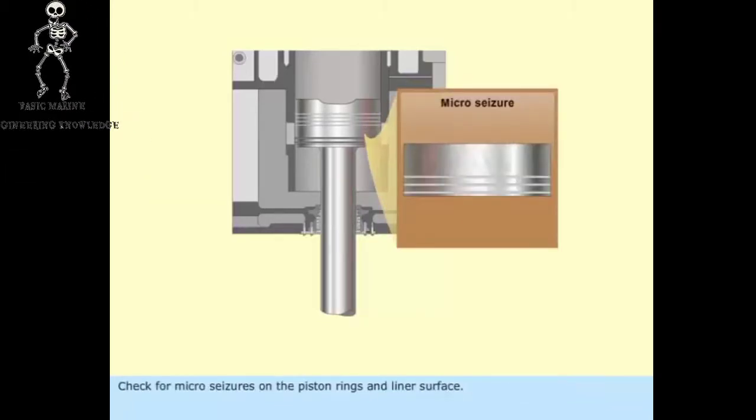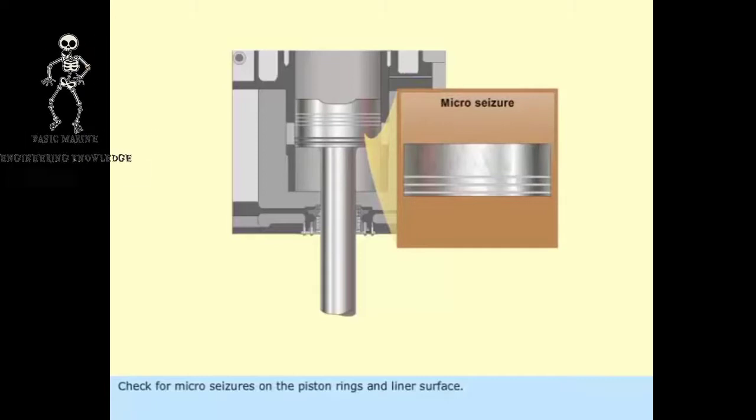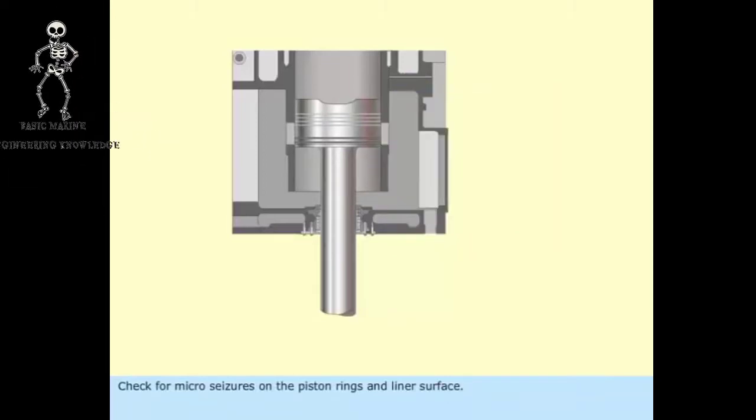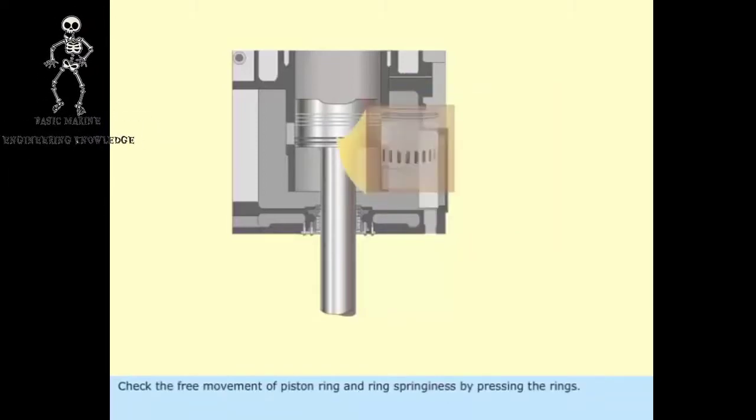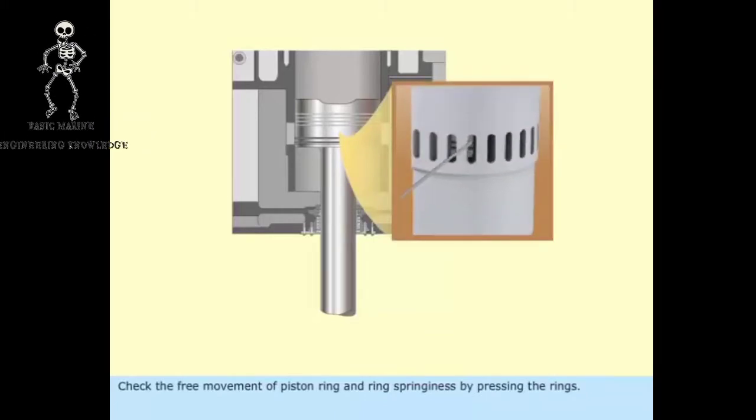Check for micro seizures on the piston rings and the liner surface. Check the free movement of piston ring and ring springiness by pressing the rings.